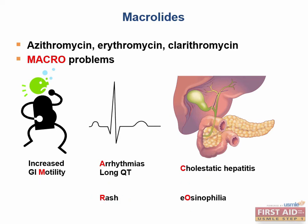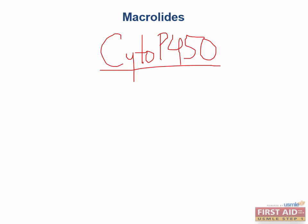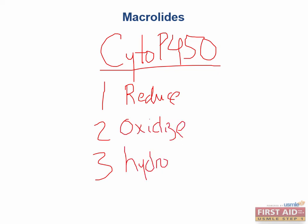It is important to remember that erythromycin and the macrolides are inhibitors of cytochrome P450. Cytochrome P450 is a family of enzymes in the liver responsible for metabolizing drugs. They can reduce, oxidize, or hydrolyze various molecules — making drugs more polar and less active. This is phase 1 of metabolism, after which drugs are further modified in phase 2 and then renally excreted.